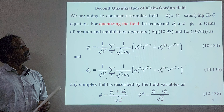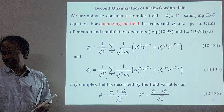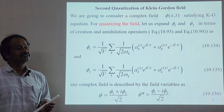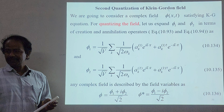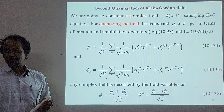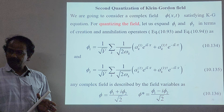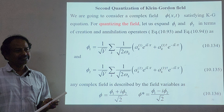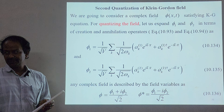The main topic is the second quantization of the Klein-Gordon field. In relativistic quantum mechanics we learned two major equations: the Klein-Gordon equation and the Dirac Hamiltonian. The Klein-Gordon equation is a second-order differential equation in space and time, whereas the Dirac Hamiltonian gives a first-order differential equation. A very important difference is that the Klein-Gordon equation gives negative probability density, which is a major discrepancy.